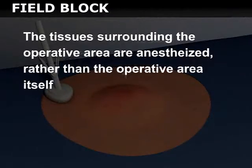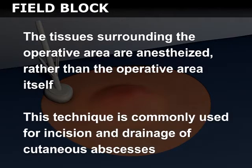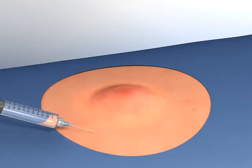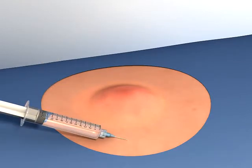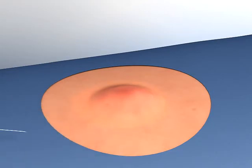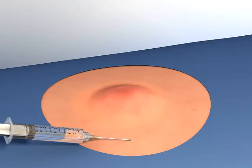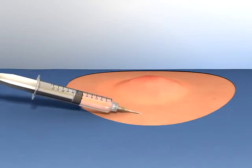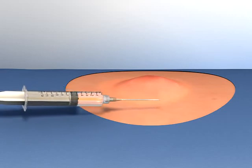A field block is a technique in which the tissues surrounding the operative area are anesthetized, rather than the operative area itself. This technique is commonly used for incision and drainage of cutaneous abscesses. First, prepare the skin with a skin-cleansing agent. Using a small needle, create a skin wheal just outside the affected area. Advance a long needle through the wheal and begin to anesthetize the perimeter of the region. Intermittently pull back on the plunger to exclude intravascular placement. Continue to anesthetize the entire perimeter, taking care to insert the needle in regions already anesthetized.